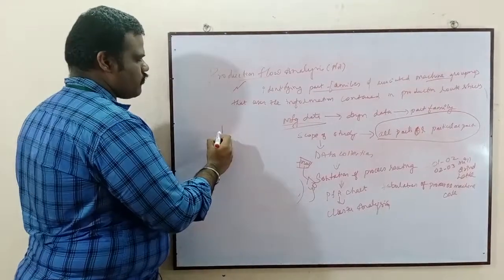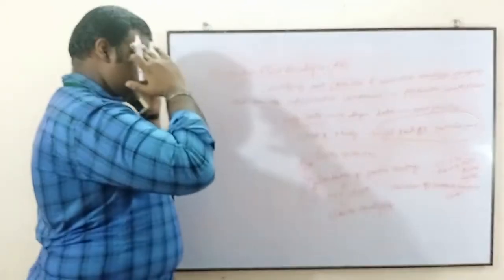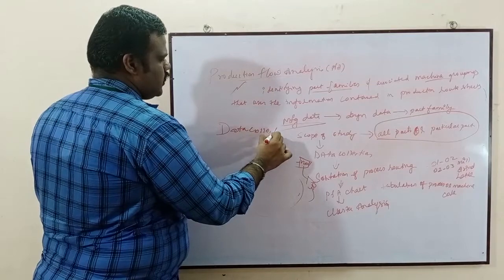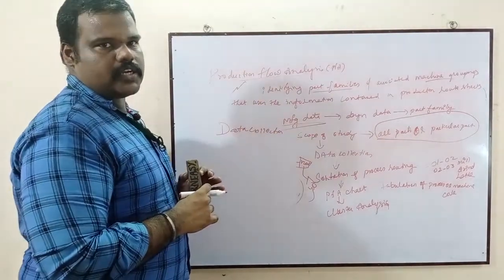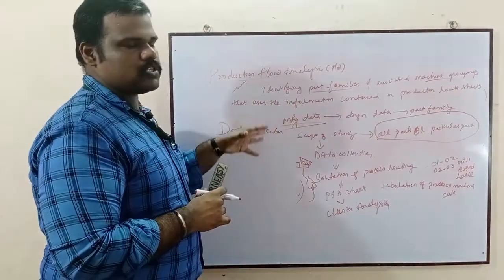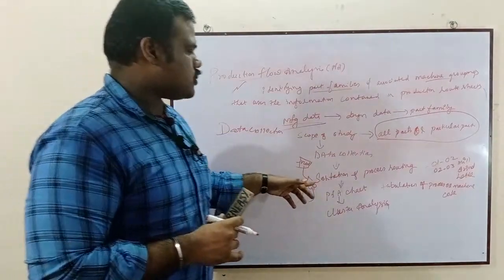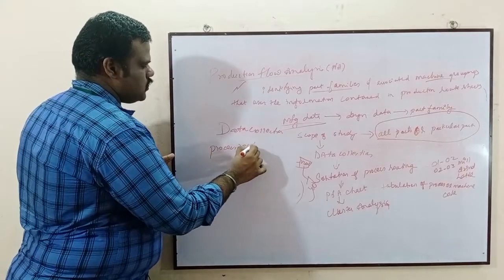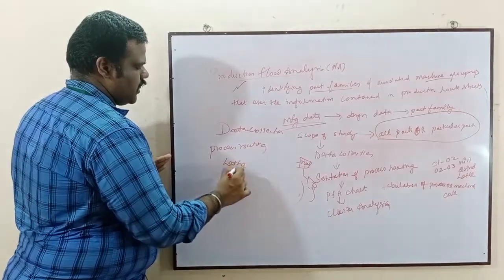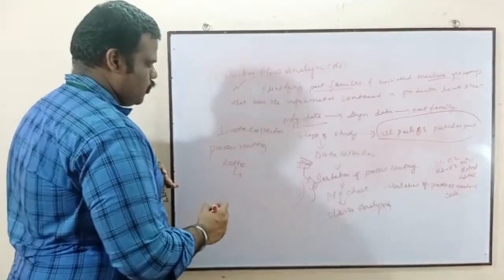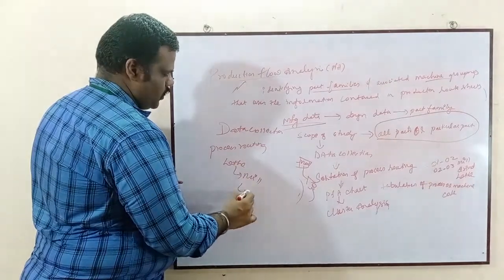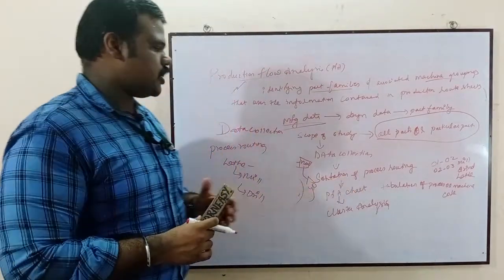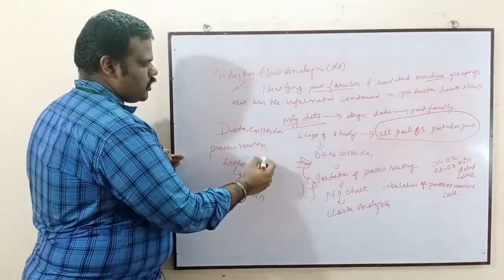The next step is data collection. After the scope of study is determined, you proceed to data collection, which is simply the manufacturing data — how this product is produced. After that comes the sortation of process routing. Process routing means what machines are being used — whether lathe machining, milling machine, or drilling. Sortation means the arrangement of the process routing steps.